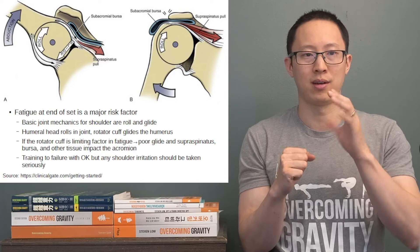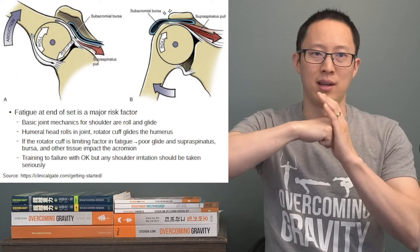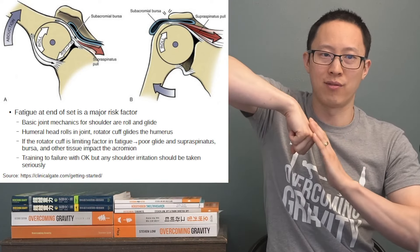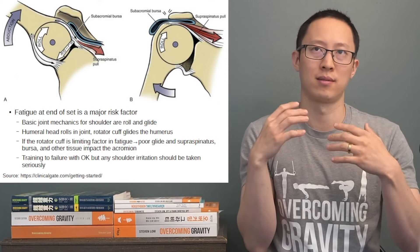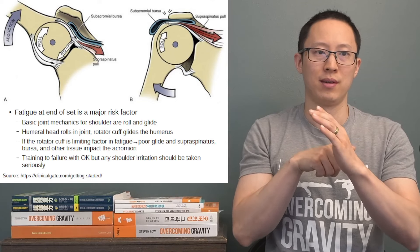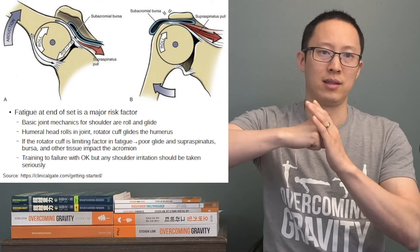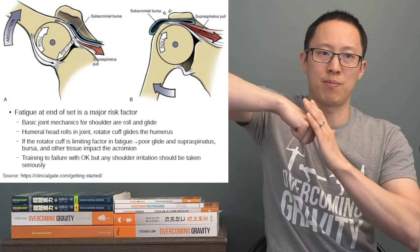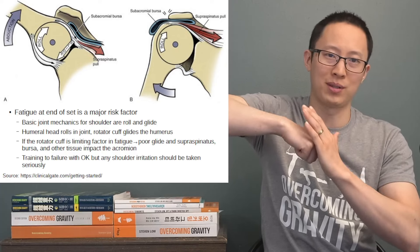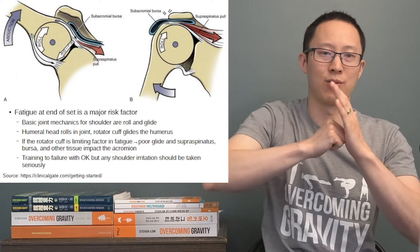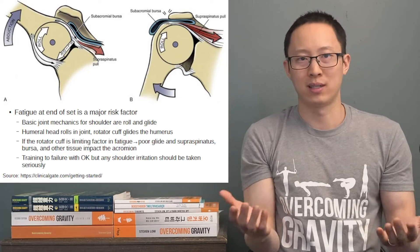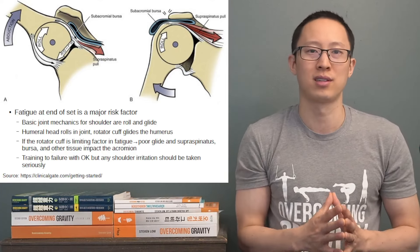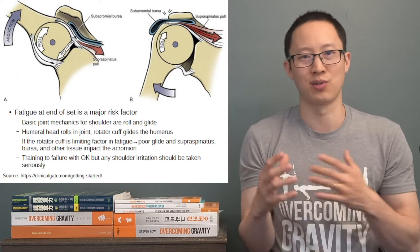As the shoulder goes up, the rotator cuff muscles glide the humerus in the socket. Think of basic roll-and-glide biomechanics: if this is the scapula with the socket and this is the humeral head, as the arm comes up there is a roll motion. Without gliding, it would roll out of the joint. The rotator cuff muscles, positioned lower on the scapula, glide the humeral head down in the socket at the same time as it rolls up — creating the space so it doesn't rub against the acromion.